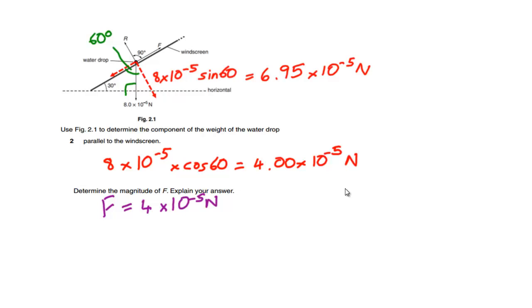The question doesn't actually ask us this, but for completeness we can also calculate the reaction force. Because the forces acting perpendicular to the slope must also cancel each other out, the contact force R acting from the windscreen must be equal to 6.95 times 10 to the minus 5 newtons, which is the component of the weight acting into the windscreen.